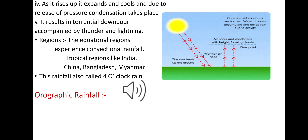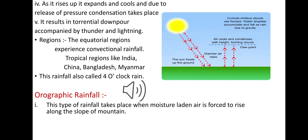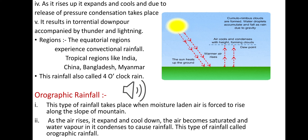The next type is orographic rainfall. This type of rainfall takes place when moisture-laden air is forced to rise along the slope of a mountain. As the air rises, it expands and cools down, the air becomes saturated, and water vapour in it condenses to cause rainfall. This type of rainfall is called orographic rainfall.